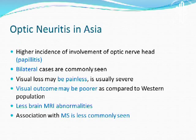Optic neuritis in Asia shows a higher incidence of optic nerve head involvement as papillitis presentation. Bilateral cases are more commonly seen. There may be painlessness, and visual outcome is poorer compared to the ONTT findings. Fewer brain MRI abnormalities in the form of white matter lesions are seen, and association with MS is less commonly found.